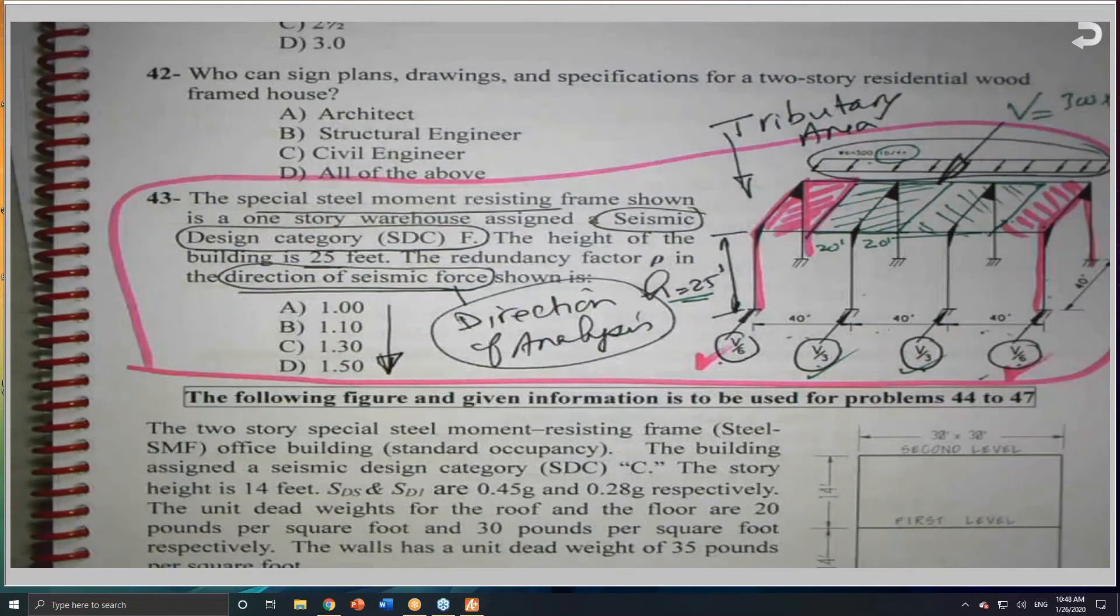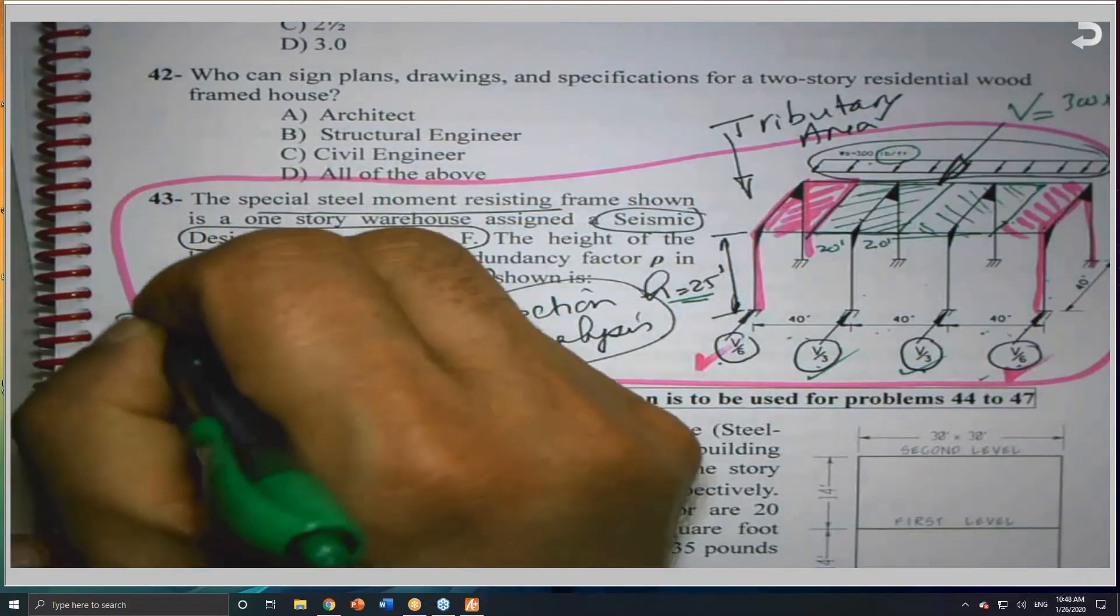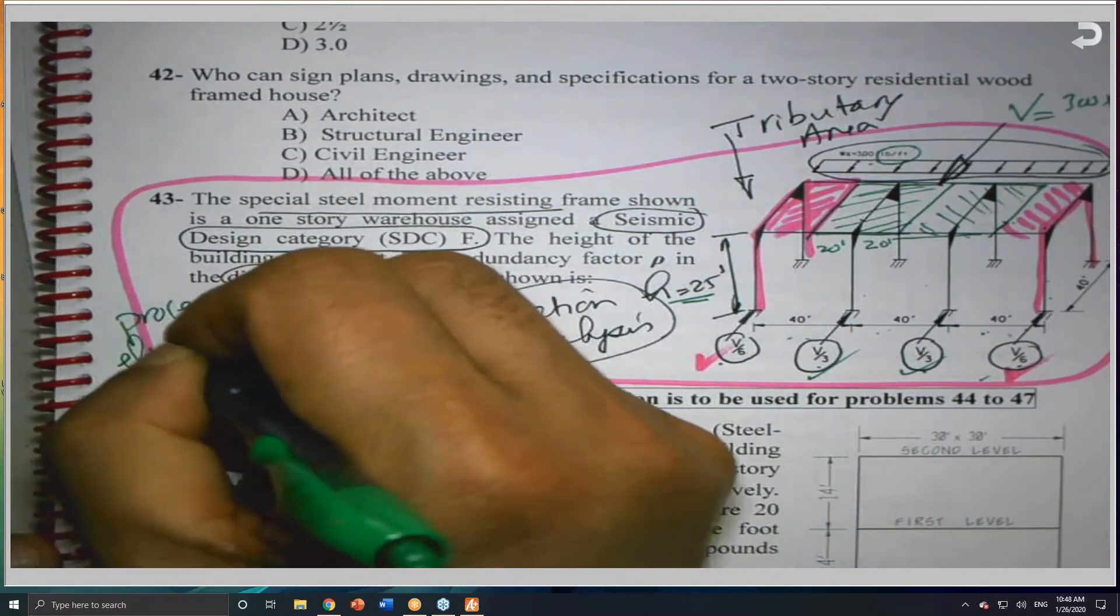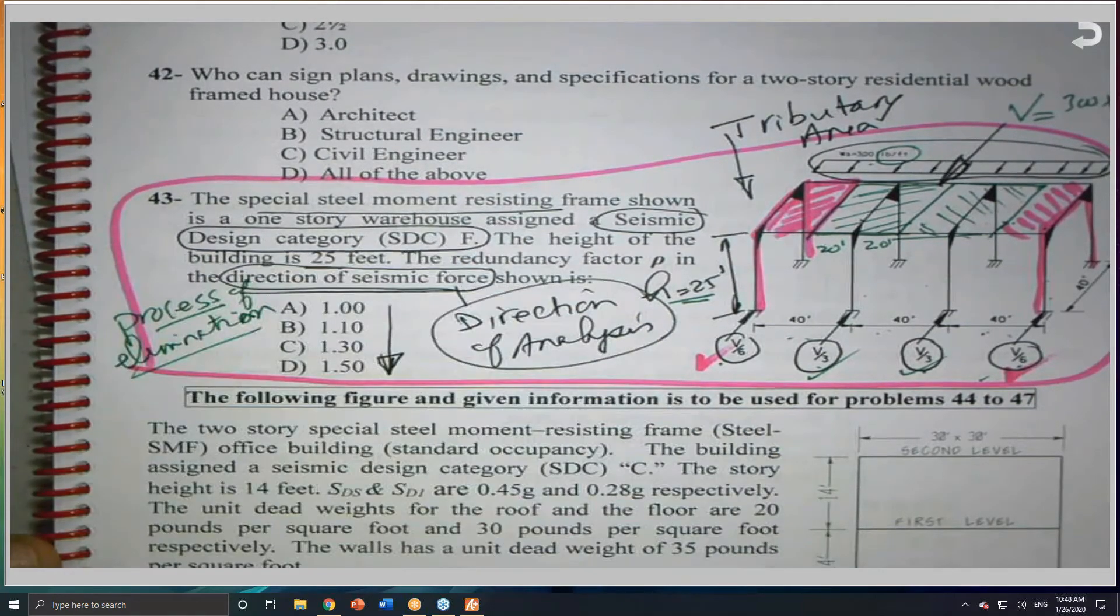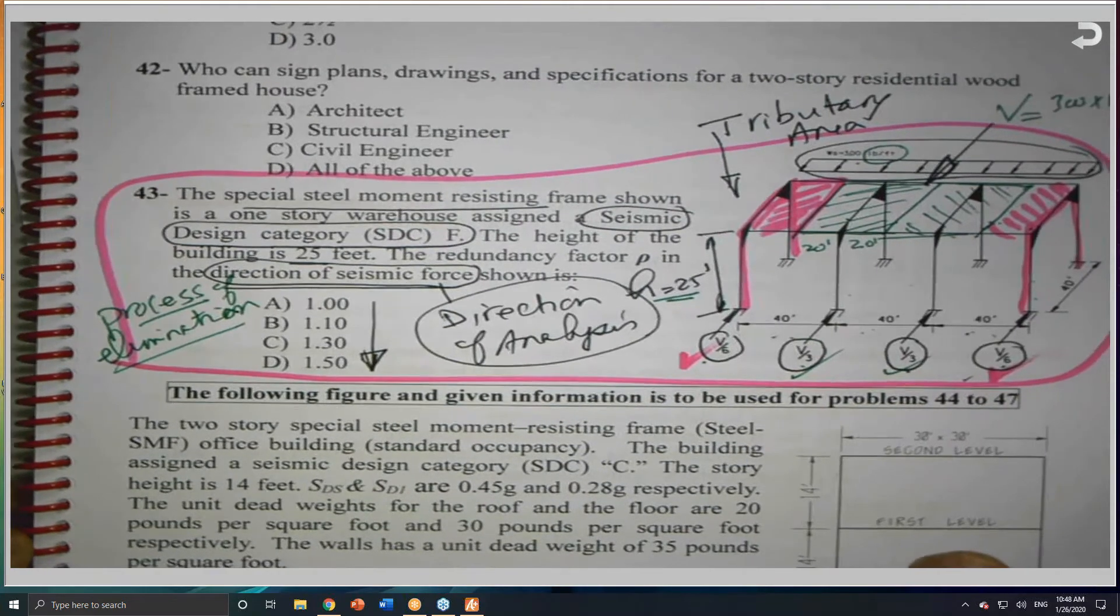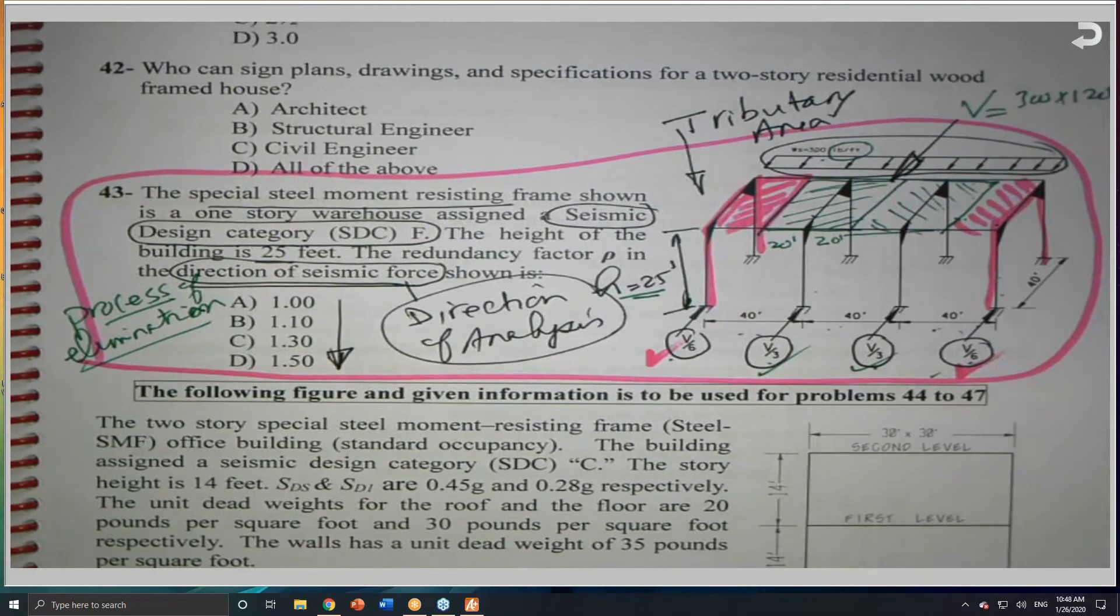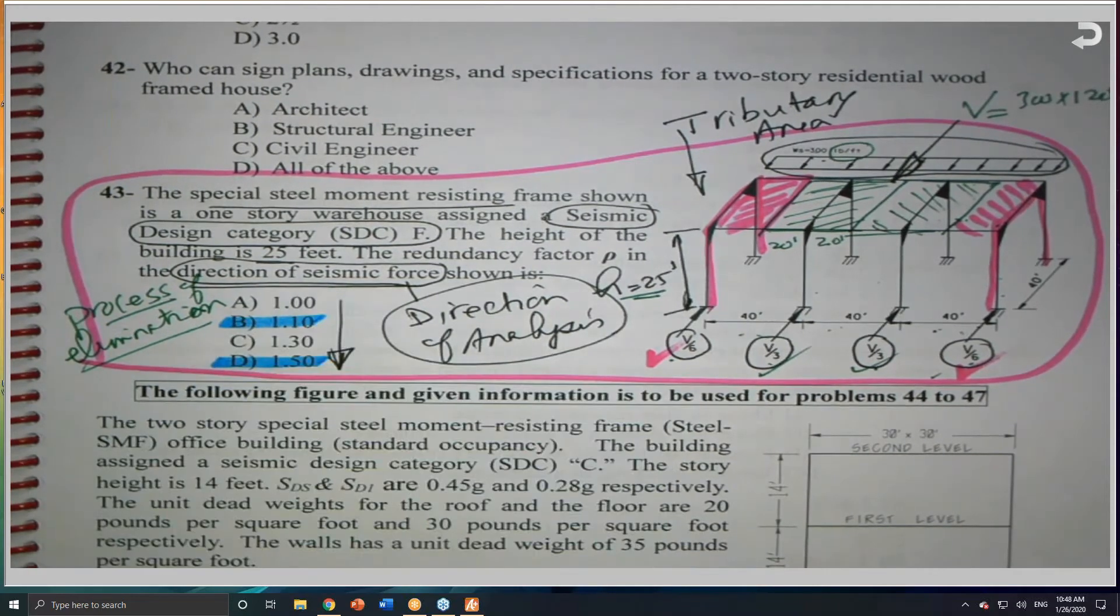If you read the four possible answers, and I need you to remember this, a process of elimination. What is the process of elimination? You eliminate the answers, it does not make any sense. Some problem, they give you answers that do not make any sense. I just mentioned before the break, that the new code, the rho, either 1 or 1.3. There is nothing in between. So there are two answers should be out, 1.5 and 1.1.